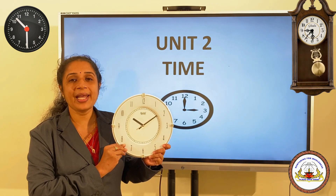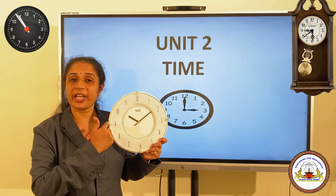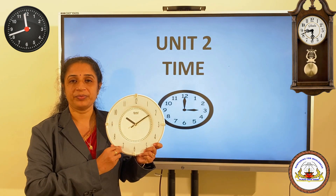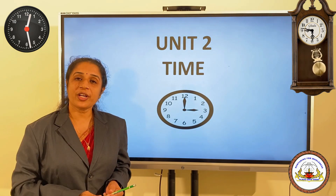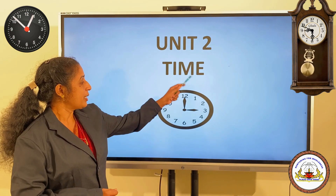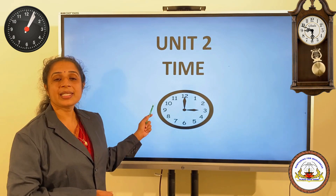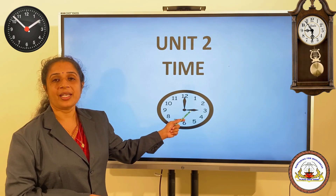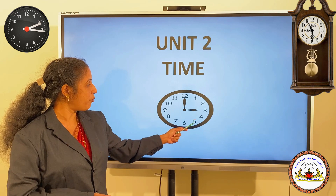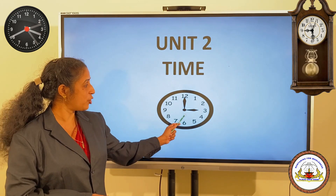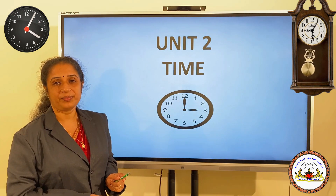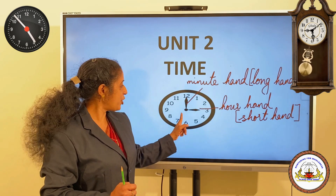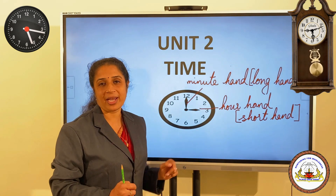A clock has a dial or a frame with numbers and two hands. Dear children, this is a clock frame. Here you can see the numbers from one to twelve and two hands. The long hand is the minute hand and the short hand is the hour hand.